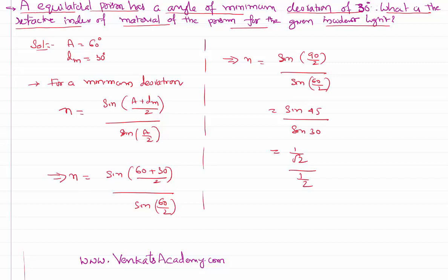That implies refractive index of the material of the prism for the given incident light is root 2 whose value is of course 1.414.